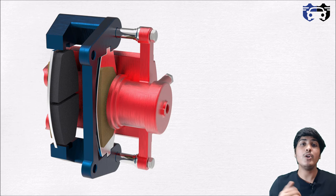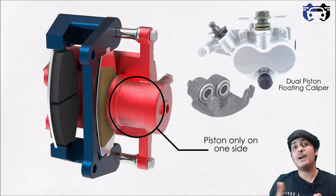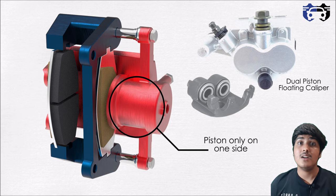As soon as both brake pads touch the disc rotor, the rotor stops rotating and your vehicle stops. One important point to note in the floating caliper is that we have a piston on only one side of the caliper, though we can have multiple pistons on one side.